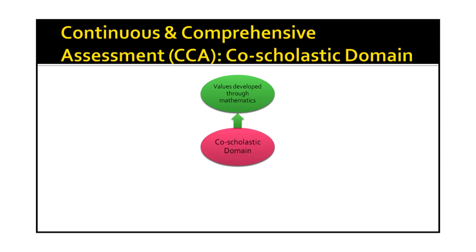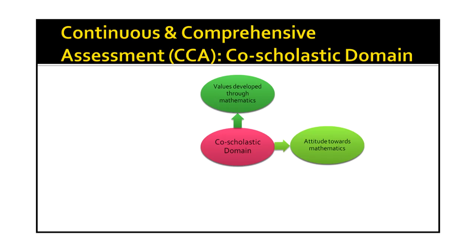One is the values developed through mathematics. It is believed that different values are developed through mathematics. One is disciplinary value — as the student solves a problem, they move logically from one step to the next, giving reason for each step, which develops the value of discipline. Then utilitarian value is developed through the application aspect of mathematics. CCA should measure whether these values are developed, and whether the student's attitude towards mathematics has changed or been strengthened.